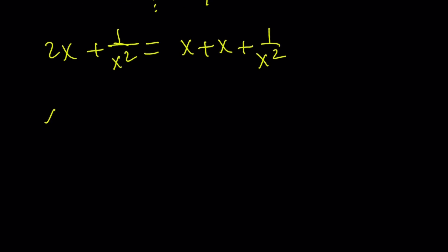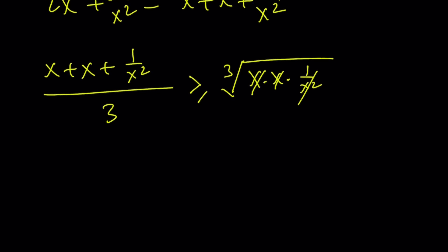So the arithmetic mean of these three numbers must be greater than or equal to their geometric mean, which is the cube root of their product. But guess what? Their product equals 1. Obviously, x is positive, x does not equal 0. So this product is just going to be 1. So we get the following from here. x plus x is 2x again, plus 1 over x squared, divide by 3 is greater than or equal to 1. This is 1. But if you multiply by 3, you're going to get that this expression is always greater than or equal to 3.